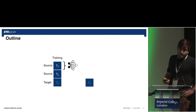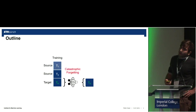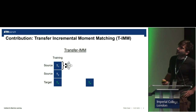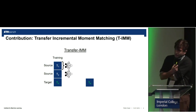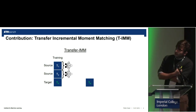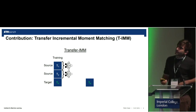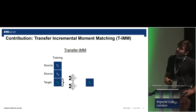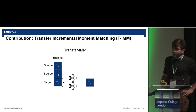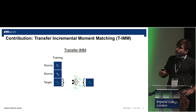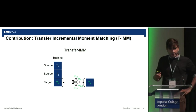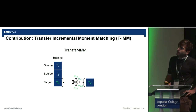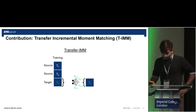We know that just training tasks incrementally is not going to work because of catastrophic forgetting. That's why we came up with an algorithm largely inspired by the lifelong learning domain, where we split training into two phases. In the first phase, we merge pre-trained models according to the new target task, and then we fine-tune on the target task.